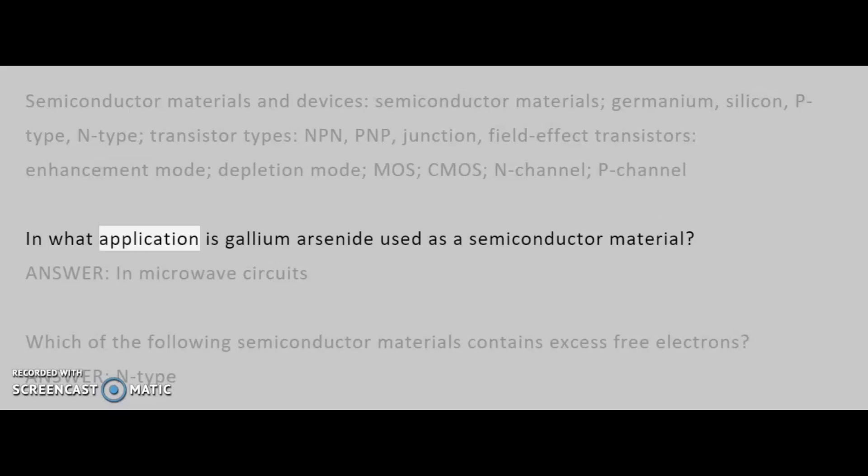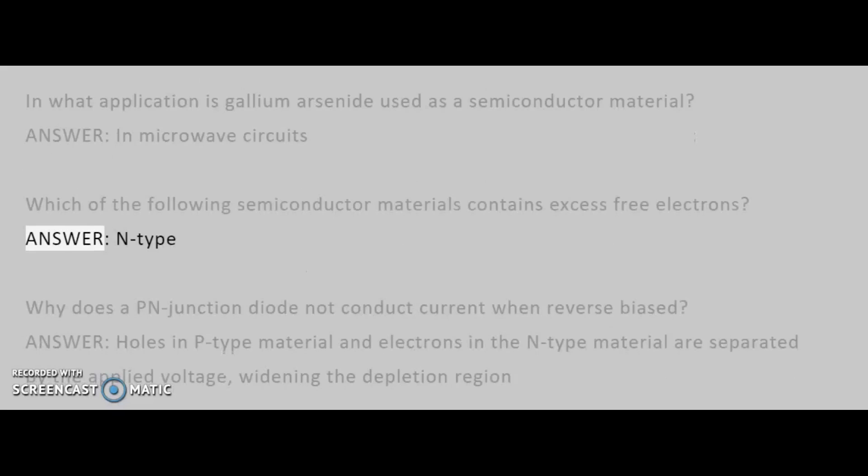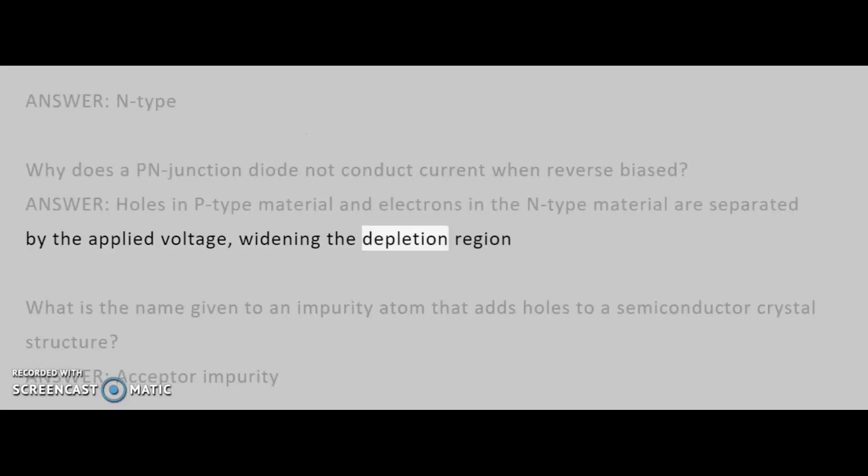In what application is Gallium Arsenide used as a semiconductor material? Answer: in Microwave Circuits. Which of the following semiconductor materials contains excess free electrons? Answer: N-Type. Why does a PN-Junction diode not conduct current when reverse biased? Answer: holes in P-Type material and electrons in the N-Type material are separated by the applied voltage, widening the depletion region.